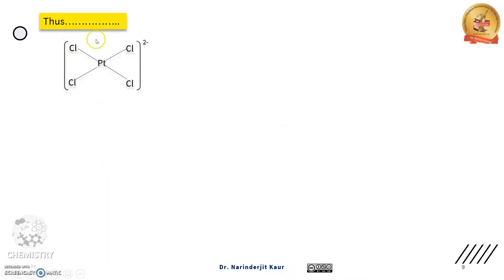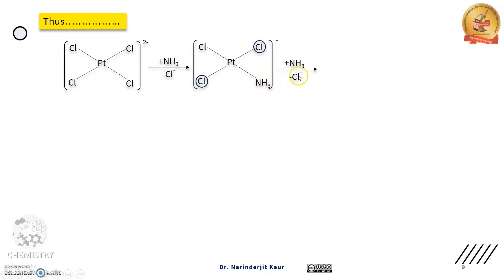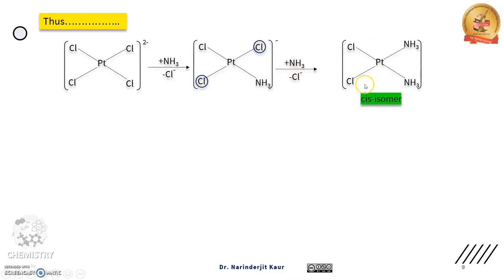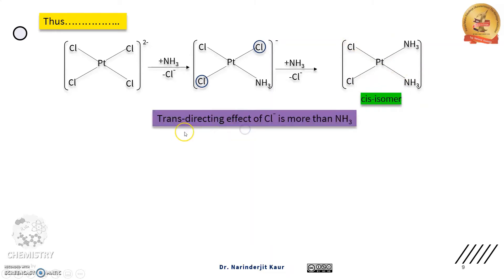फिर से वही complex ले रहे हैं — tetrachloroplatinate — और इसको ammonia ligand के साथ replace करेंगे। Second step में ammonia की replacement chloride से नहीं होगी, बल्कि encircled chloride ligands में से किसी एक की होगी, because chloride ligand का trans directing effect ज़्यादा stronger है as compared to ammonia. So cis isomer will be the exclusive product. Trans directing effect of chloride is more than ammonia.